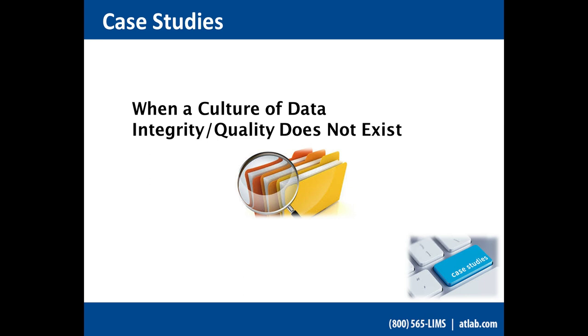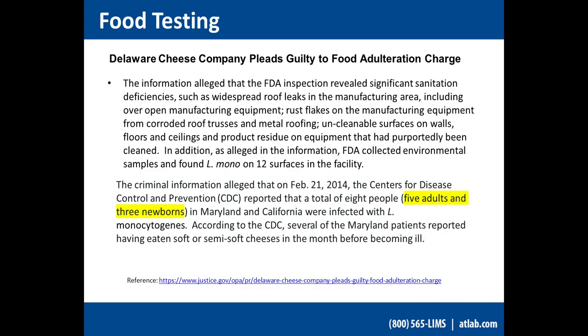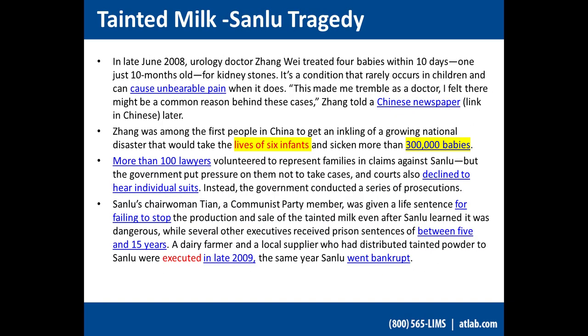Case studies really make data integrity come to life. The first is a food testing lab — a Delaware cheese company. The FDA found significant sanitation deficiencies, including leaks in the roof dripping rainwater onto equipment and processes. Their equipment was dirty, and they were not actually following their SOPs. This led to contamination with the bacteria Listeria monocytogenes, found on all surfaces. The impact was that a total of eight people were infected — five adults and three newborns. It's really important when you have an SOP in place to follow it.